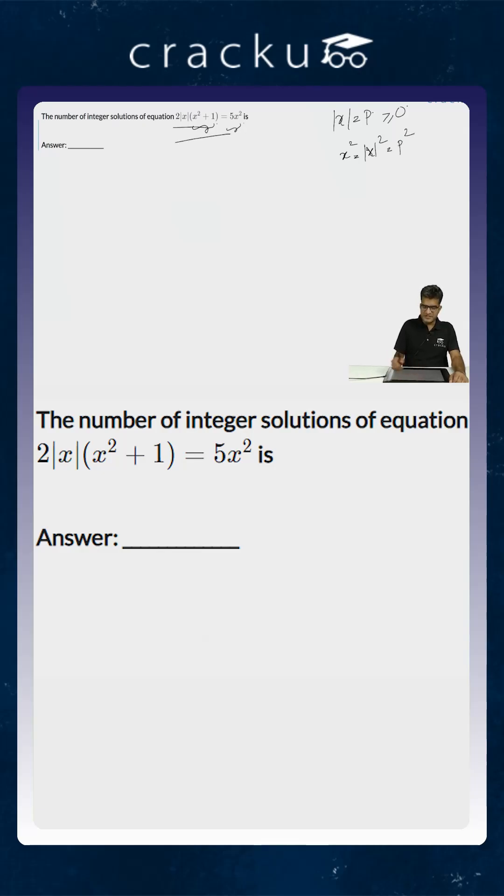So the given equation is equal to 2 times p into p square plus 1 is equal to 5p square. Now one solution for this is that p is equal to 0, and if p is not equal to 0 we can cancel 1p over here and here.